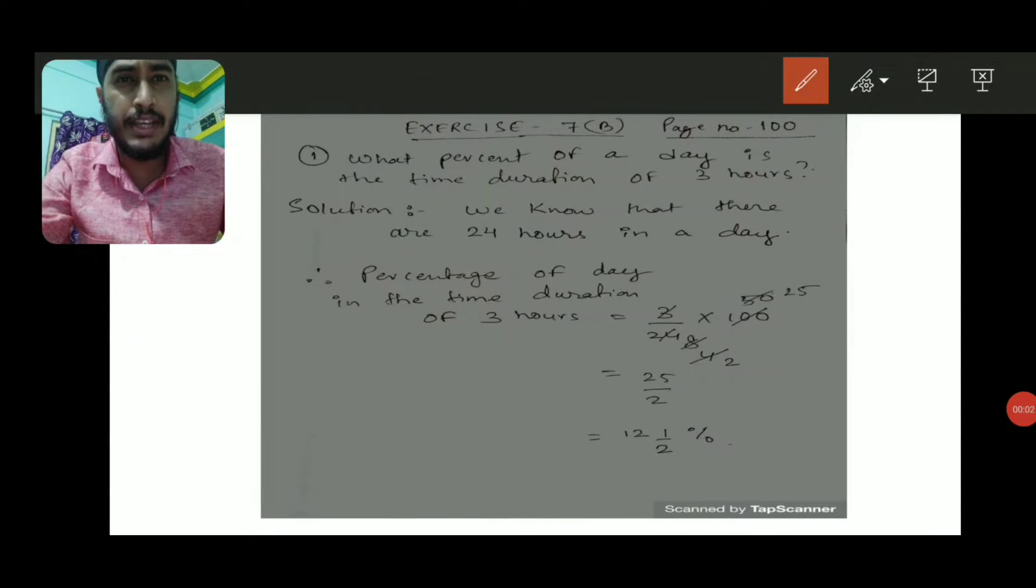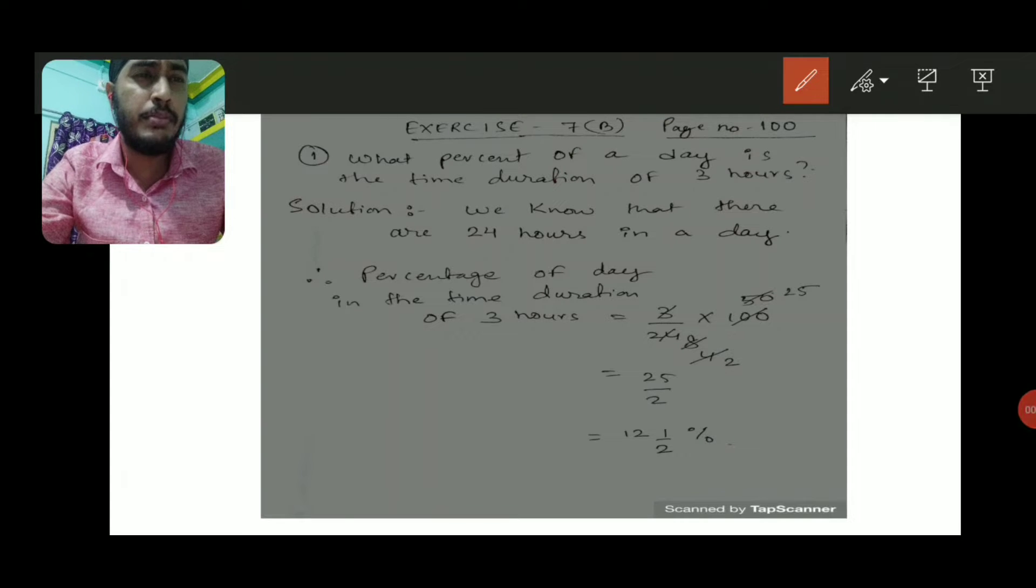Dear students, we'll be doing Exercise 7b, page number 100. The first question is: what percent of a day is the time duration of 3 hours? You have to find the percentage of day in the time duration of 3 hours. We all know that in a day there are 24 hours.